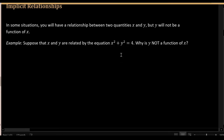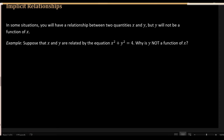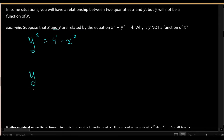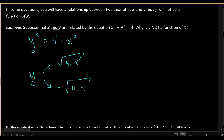x squared plus y squared equals 4. Imagine that we took this equation and tried to solve it and isolate y. We could begin by moving x squared to the other side: y squared equals 4 minus x squared. But if you try to completely solve for y and get rid of that square, you run into an issue — should y equal the positive square root of 4 minus x squared, or the negative square root?